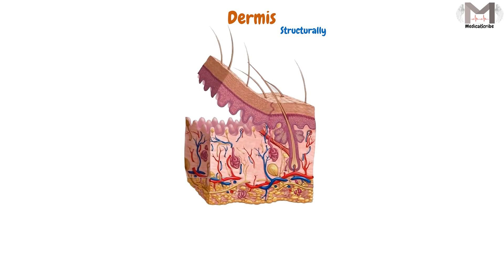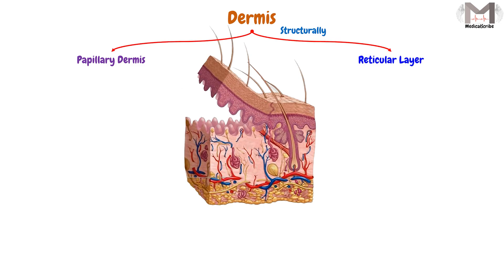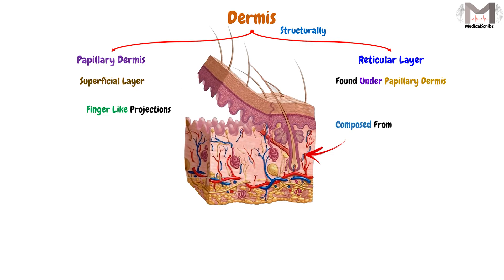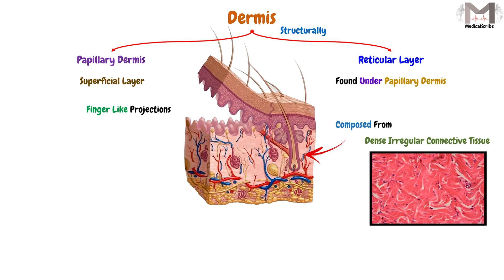If we classify the dermis layer structurally, it will be divided into two layers: the papillary dermis and the reticular layer. The papillary dermis is the superficial layer of the dermis, consisting of finger-like projections, while the reticular layer is found under the papillary dermis and is composed, as mentioned, of dense irregular connective tissue.